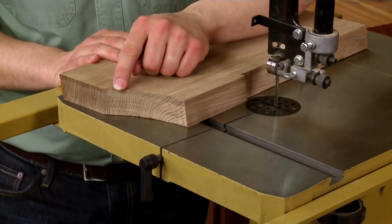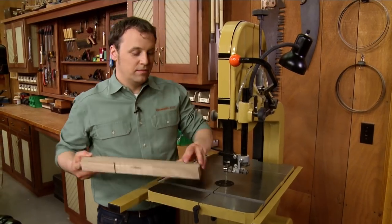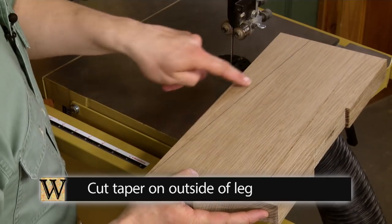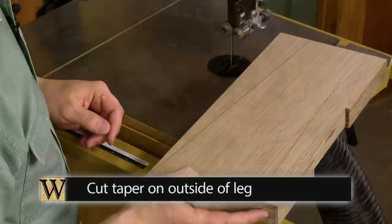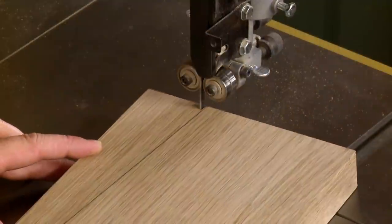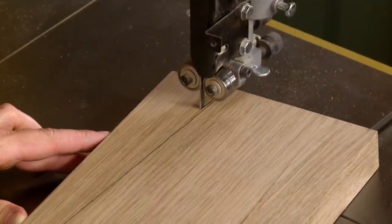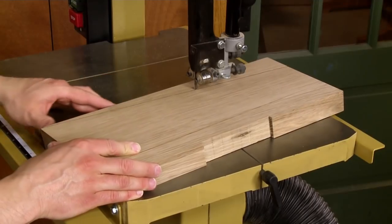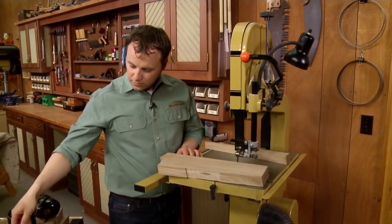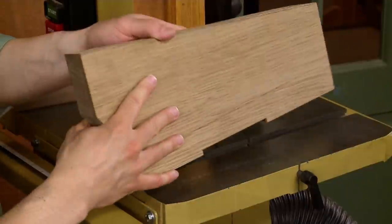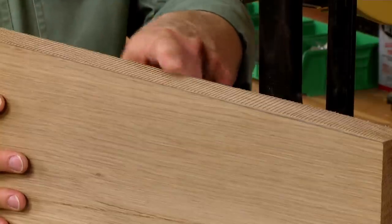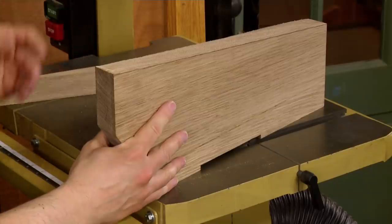After sanding the arc smooth, I can move on to the other detail. And that's to cut a taper on the outside edge of the leg. Here again, stay to the waste side of the line and make a nice straight cut. All I need to do now is to clean up the blade marks and sand the edges smooth. Then the legs are complete.